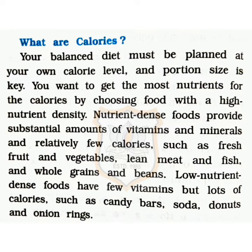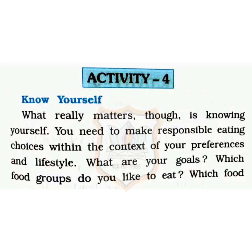Now three questions are asked. What type of food will you choose to make a balanced diet? Define nutrient-dense food and name four items of that group. And third, define low nutrient-dense food and name four items of that group. I will give you these as a PDF. We now move on to activity four.